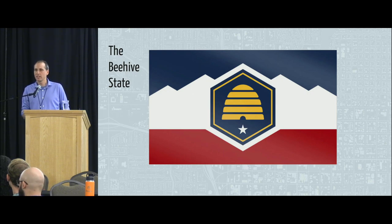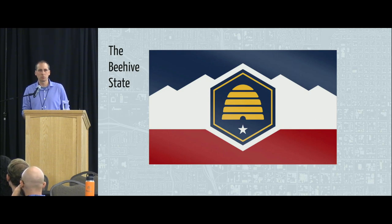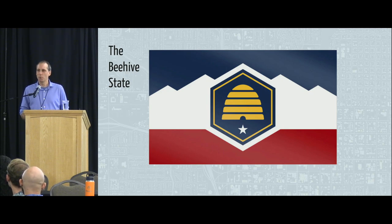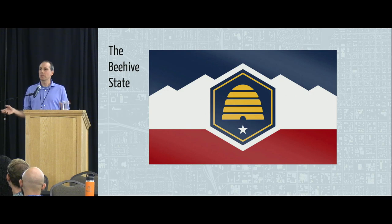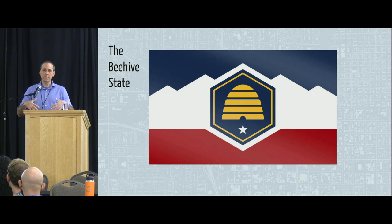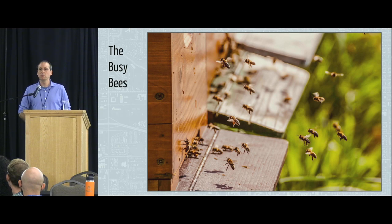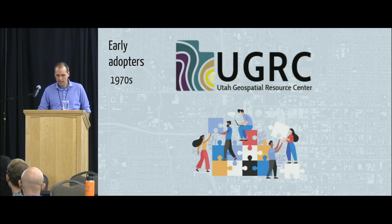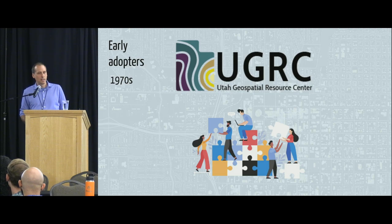This is our new flag — we're pretty proud of it. It was passed by the legislature in 2023. We had an old flag before that, more of a seal on a bedsheet, sometimes called the SOB. We've moved past that. One of the things I want to point out is the beehive, which was on the old flag and is on the new flag, because it's really representative of who we are in Utah. As the community descended on this valley it was: let's work together, let's make this work. We're known as the Busy Bees because of that, and my office, the Utah Geospatial Resource Center — UGRC — embodies this spirit.